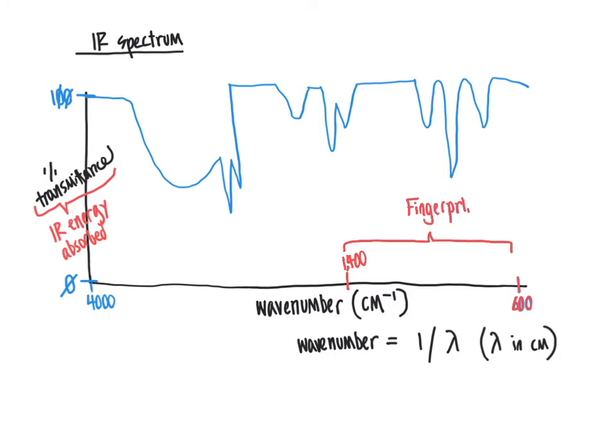Generally speaking, for purposes of this class and most applications where you won't have access to a standard of the compound of interest, the fingerprint region is not particularly valuable. It's only going to be if you can exactly match with some other spectrum that it will indicate that two compounds are the same. It's not generally useful for a new molecule where you don't have a standard available.